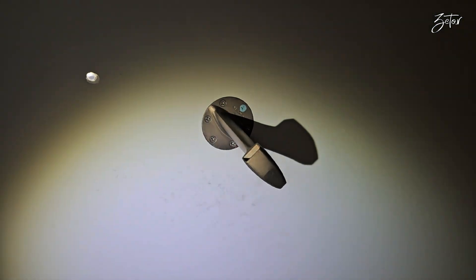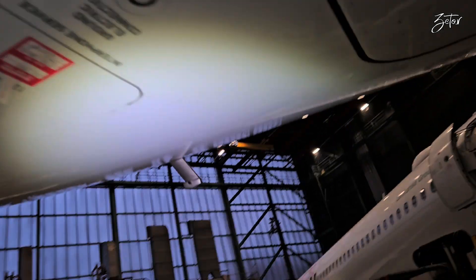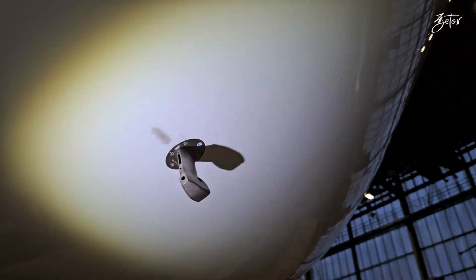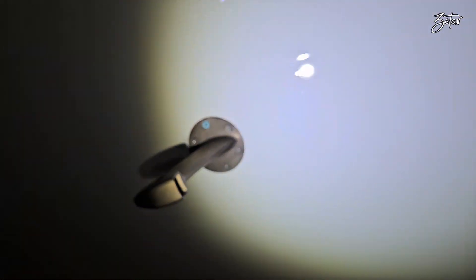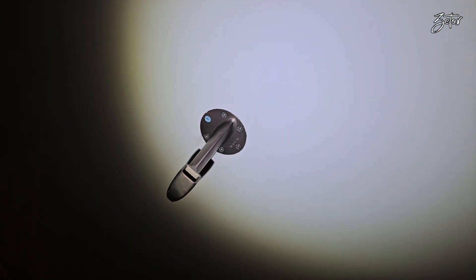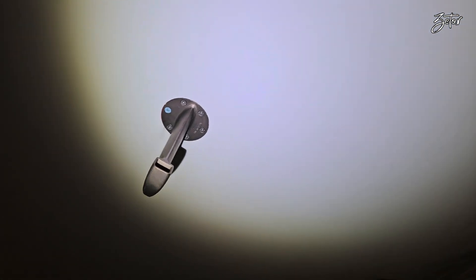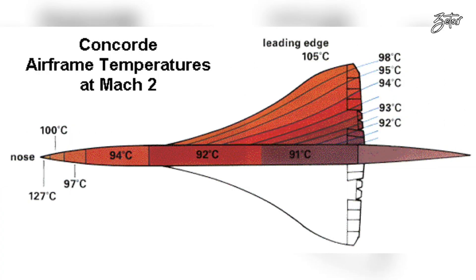If you look at it very simply, TAT is a sum of the static air temperature and the kinetic component depending on speed. This means that TAT in cruise is typically around 30 degrees Celsius higher than outside air temperature, and of course, the faster the airplane moves, the bigger the temperature difference will be.